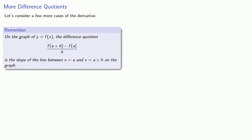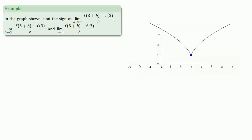Let's consider a few more cases of the derivative. It's helpful to remember that on the graph of y equals f of x, the difference quotient is going to be the slope of the line between x equals a and x equals a plus h on the graph. So let's see if we can find the difference quotient — the slope of the secant line between x equals 3 and x equals 3 plus h.